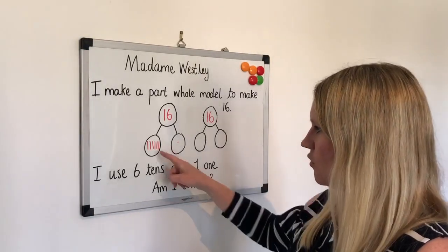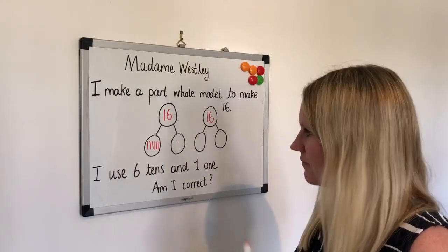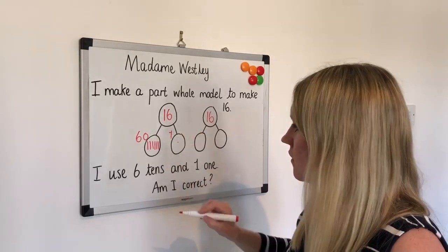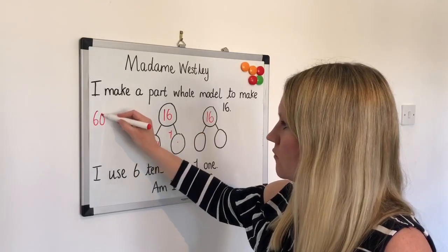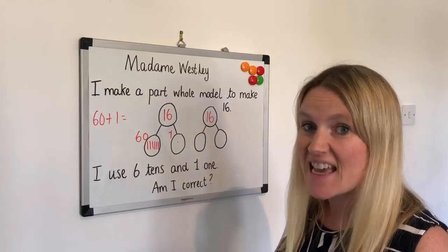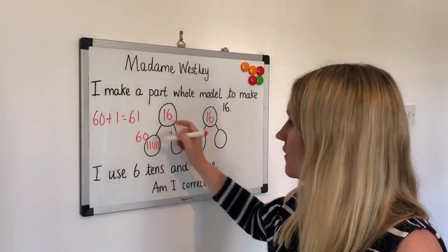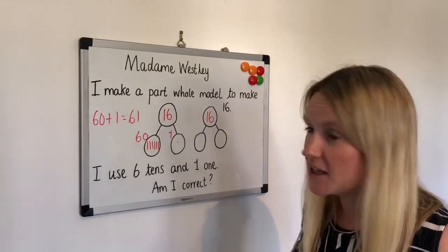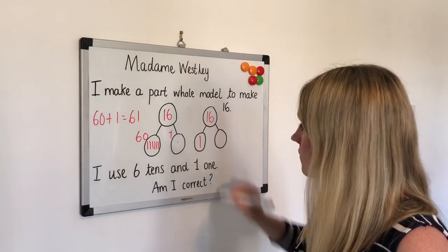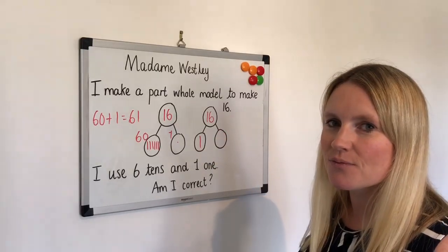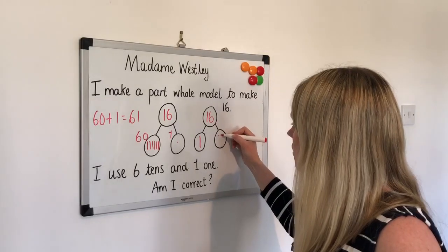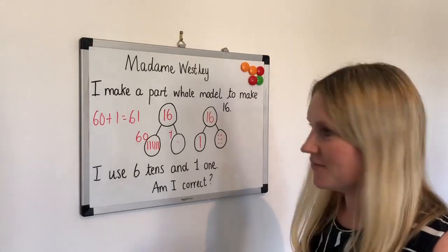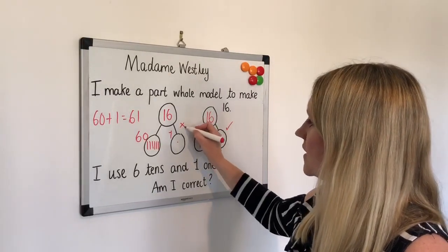What does six tens make? 60 plus one. 60 add one would make 61, not 16. So what I should have done — which I hope you did at the beginning — is put one ten and how many ones? Six: 1, 2, 3, 4, 5, 6. This one is correct. This one is incorrect.